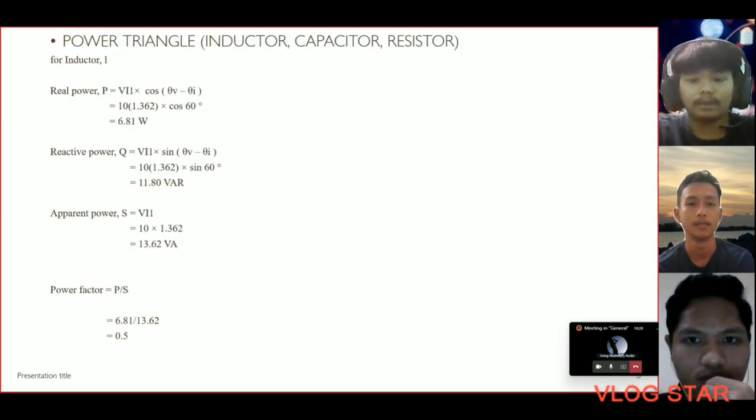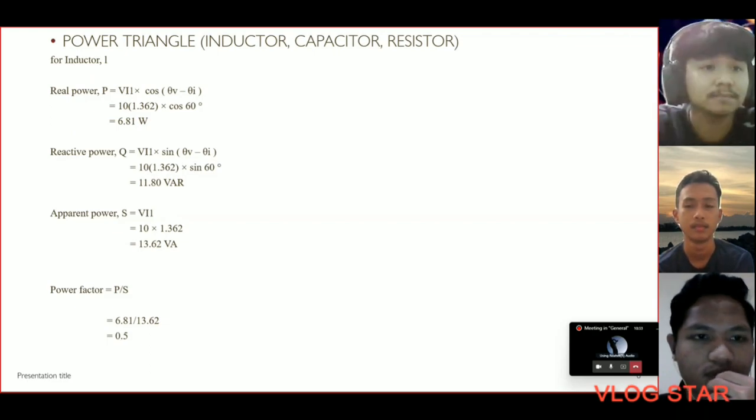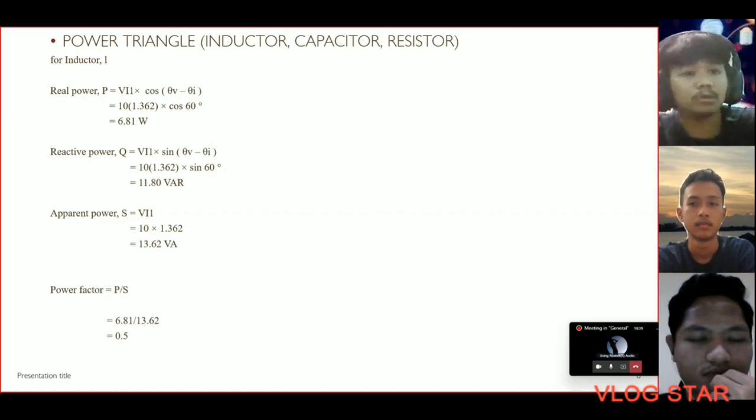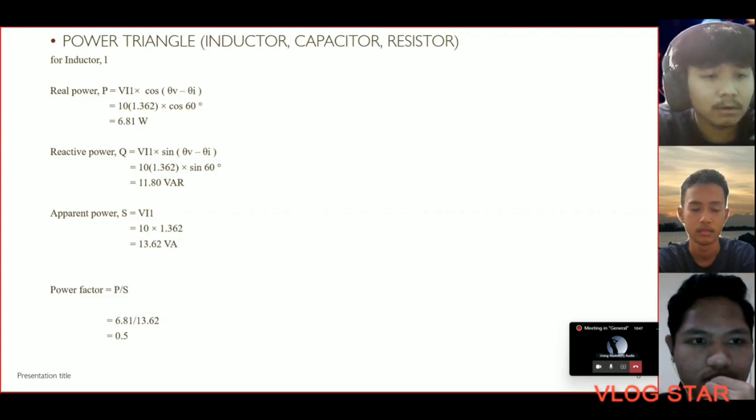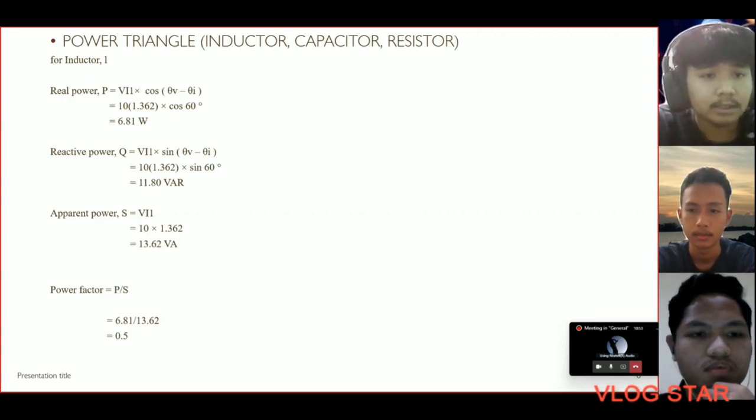We move to how to find the power triangle, which is PQS for inductor, capacitor, and resistor. To find the real power P for the inductor, we use the formula VI cos θ. For reactive power Q, we use the formula VI sin θ.